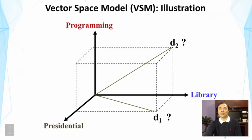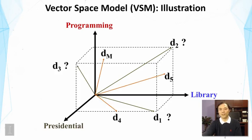So this shows that by using this vector space representation, we can actually capture the differences between topics of documents. Now you can also imagine there are other vectors. For example, d3 is pointing to that direction. That might be about presidential programming. And in fact, we can place all the documents in this vector space.